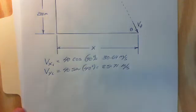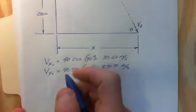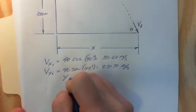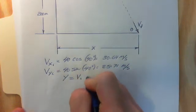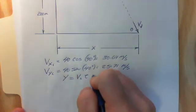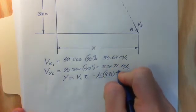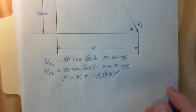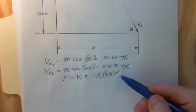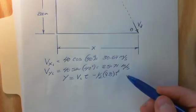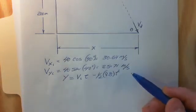There are two things you can do here. You can use the equation y equals vi times t minus one-half times 9.8 times t squared. However, my recommendation is that you'll end up with a quadratic equation, and some students don't like solving a quadratic equation.